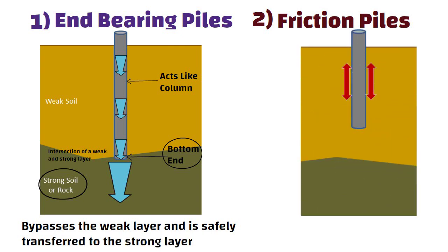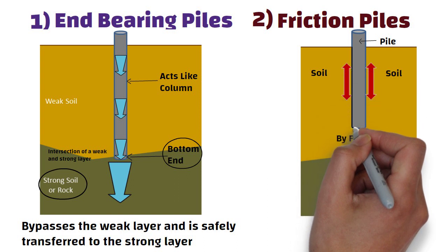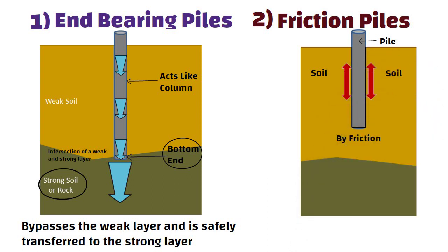Friction piles work on a different principle. The pile transfers the load of the building to the soil across the full height of the pile by friction. In other words, the entire surface of the pile which is cylindrical in shape works to transfer the forces to the soil.